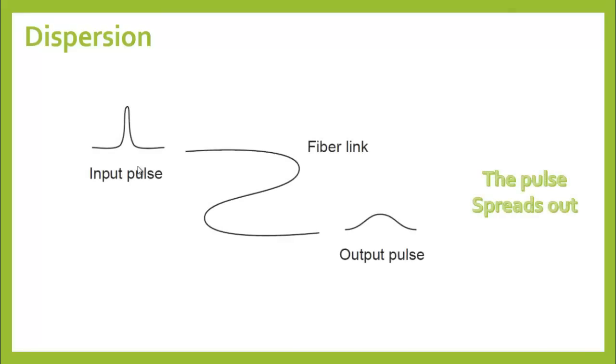Typically when we send a pulse through a standard step index fiber link it comes out spread out. This phenomenon is what we call pulse dispersion. Dispersion is the broadening of the input pulse in time as it propagates through the fiber.